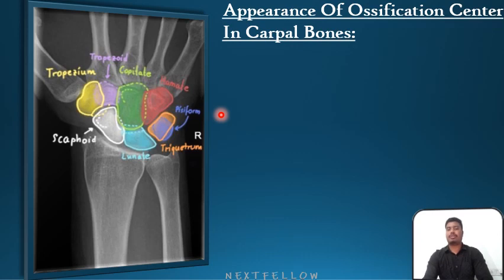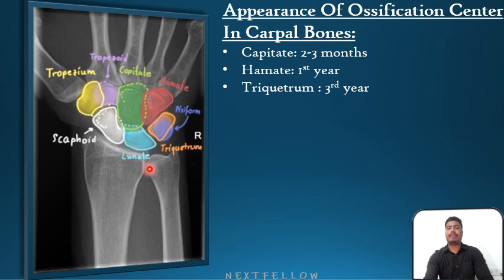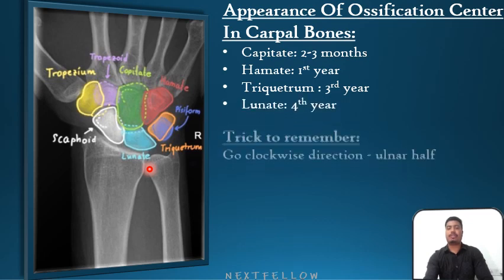Capitate appears at 2 to 3 months. Hamate appears at the first year. Triquetrum appears at the third year. Lunate appears at the fourth year.